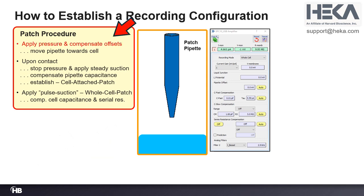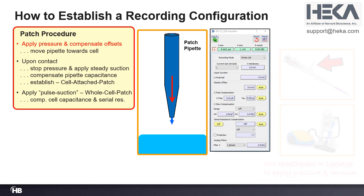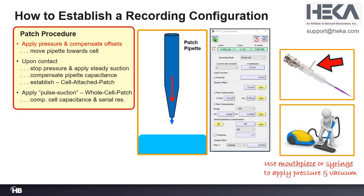The first thing is to apply pressure and compensate the offsets. When you apply pressure to the pipette, a jet stream appears from the tip — you don't see it, but the solution flows out at the tip. To apply pressure, put a tubing onto the metal rod of the pipette holder, and attach a mouthpiece or syringe to apply pressure or suction; you can also attach a three-way stopcock to arrest either. The picture shown here illustrates that you can apply either a vacuum or pressure — and no, don't use a vacuum cleaner, that's just a little joke.